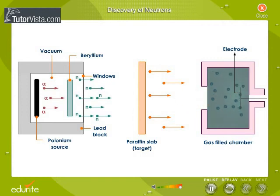By measuring the current, he estimated the speed of the ejected atoms and came to the conclusion that the mysterious rays contain particles having mass almost equal to that of the protons. Chadwick identified these uncharged particles as neutrons.